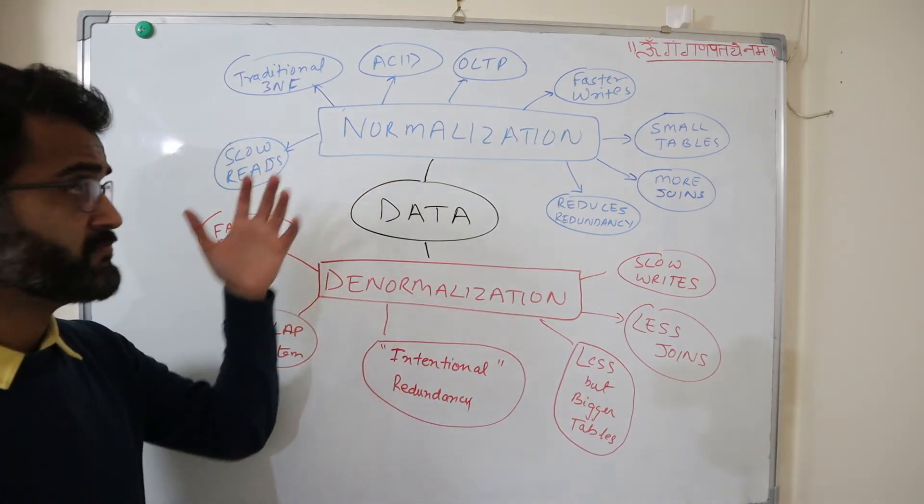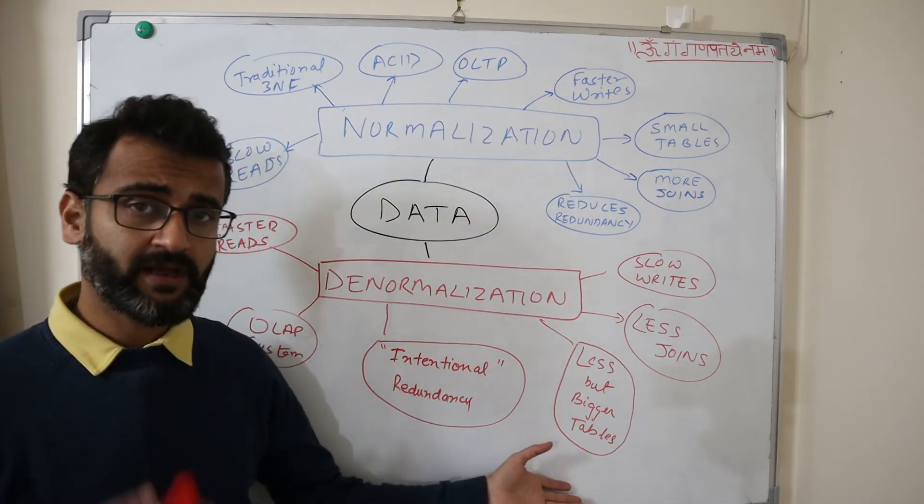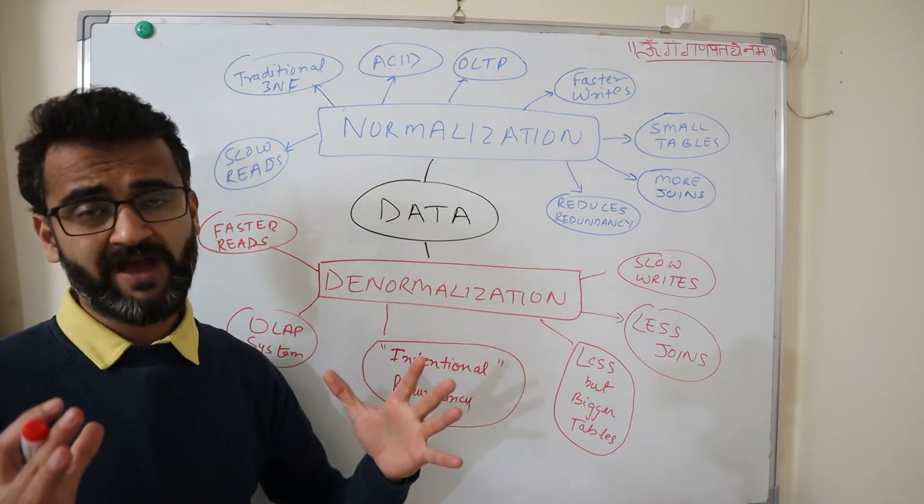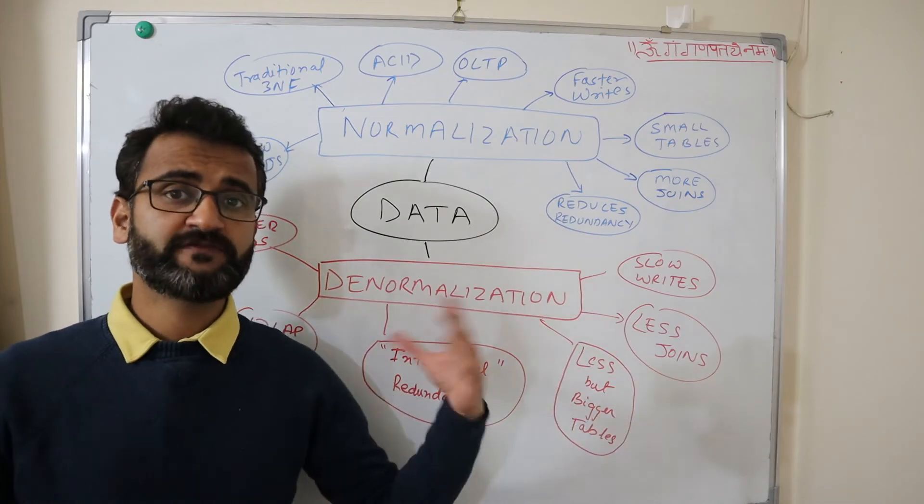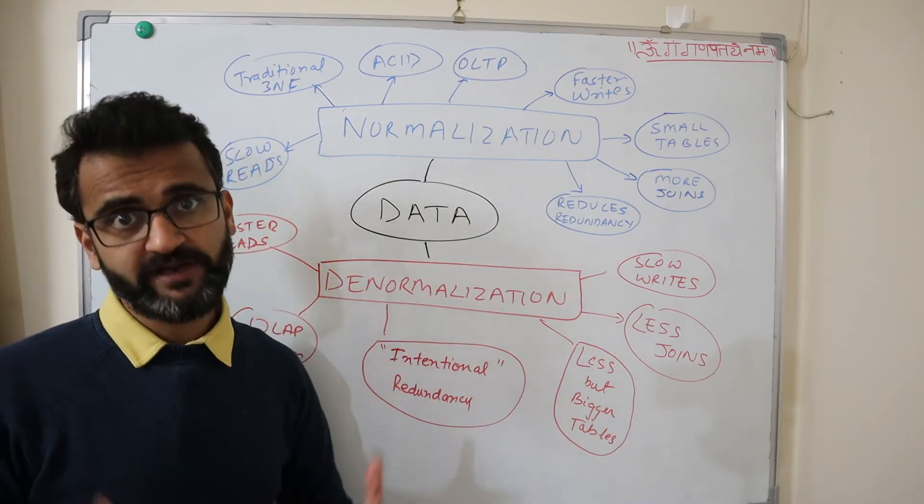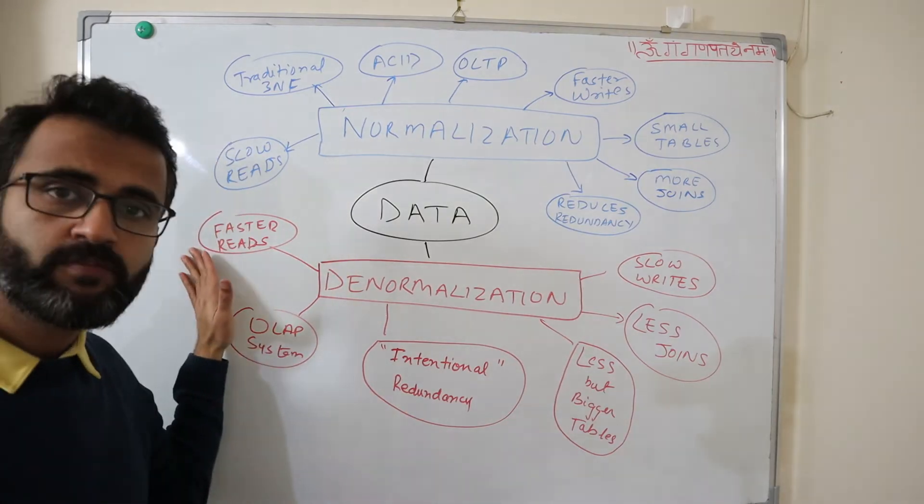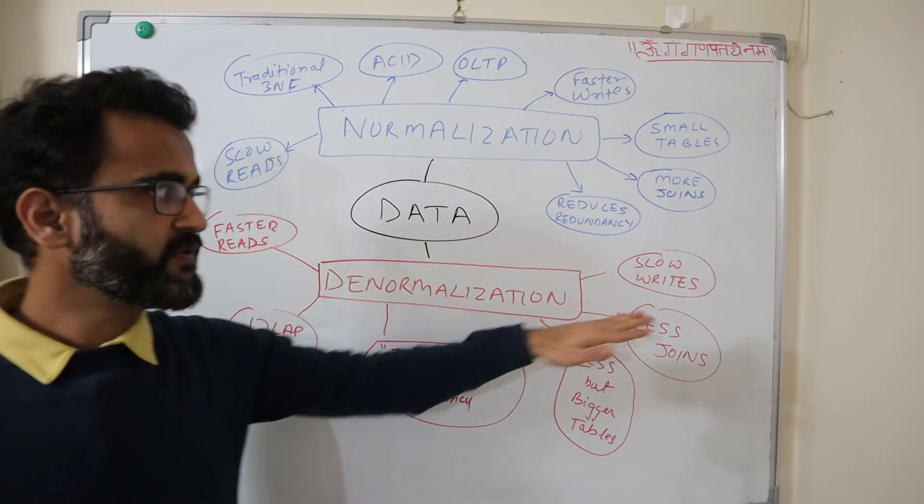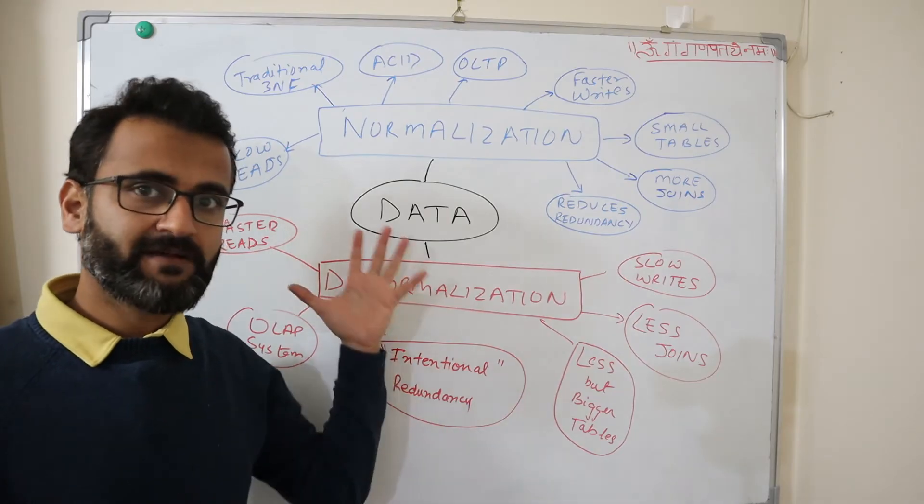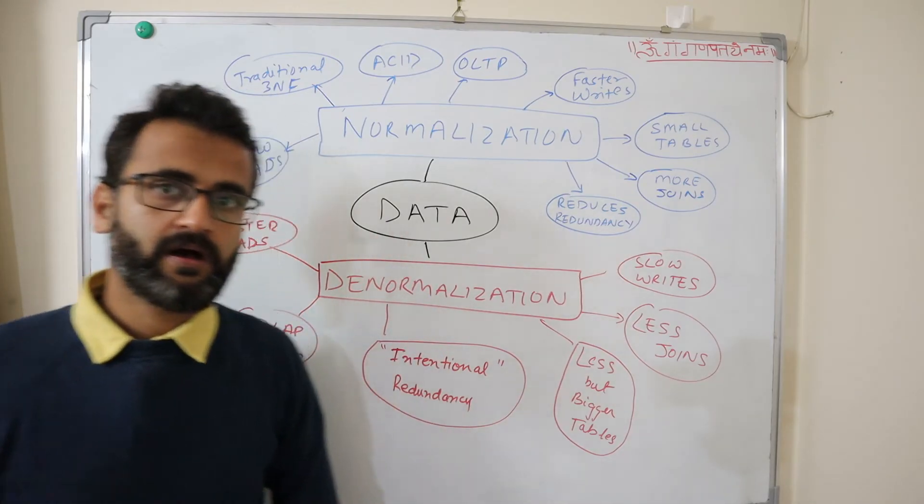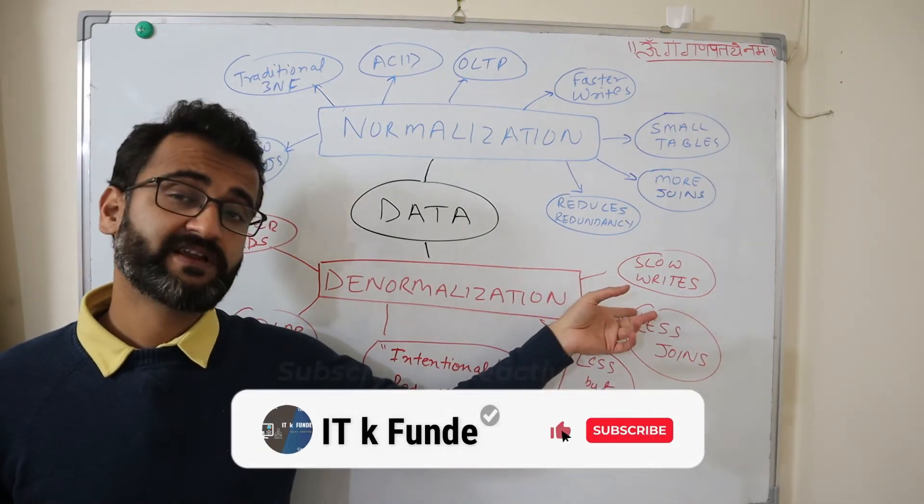It is exactly opposite to normalization. It introduces redundancy, it has bigger wider tables. In a denormalized data, you have a lot of data within one particular table. You have obviously lesser joins because if you combine everything in one table, your joints will get reduced and your performance will increase. So on the flip side, while it will provide you with faster reads, when it comes to writes, it would be slower than normalized data because we are putting everything in one particular table. We are making sure that the reads are faster, so writes will take a hit.